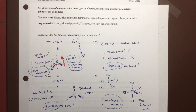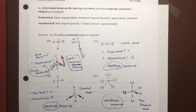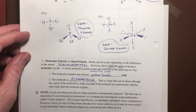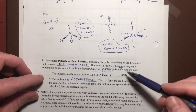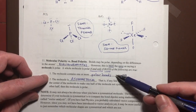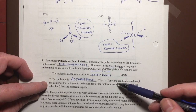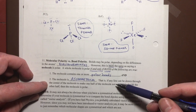And that is how we determine if a molecule is polar or nonpolar overall. Remember, there are two criteria: the molecule must contain one or more polar bonds somewhere in it, and the molecule must be asymmetrical or unbalanced somehow. Both criteria must be met for a molecule to be polar overall.